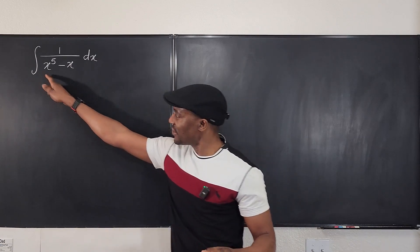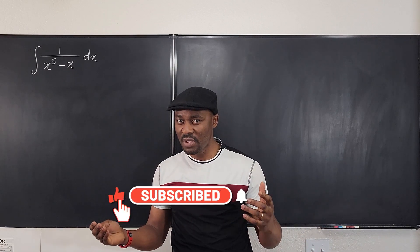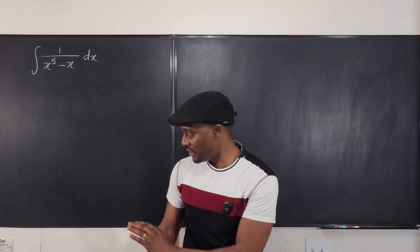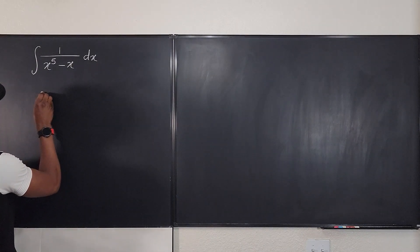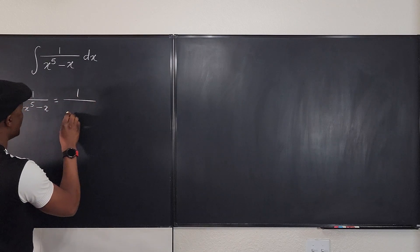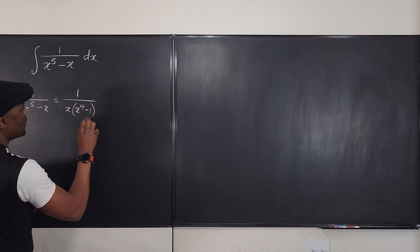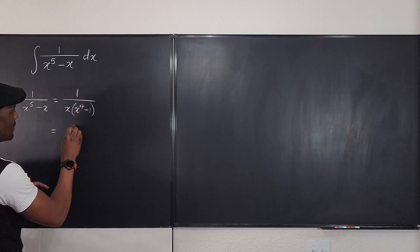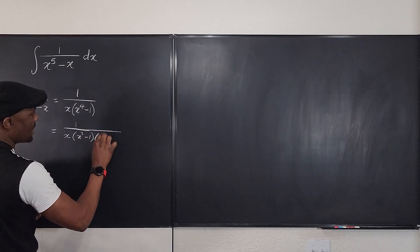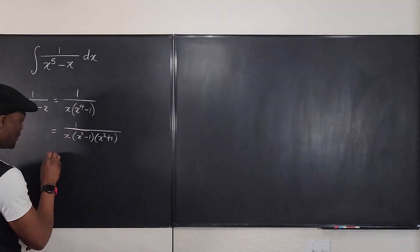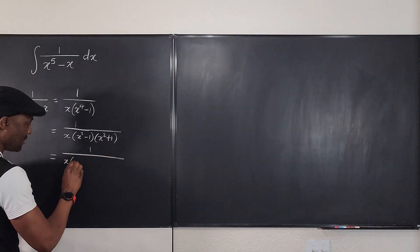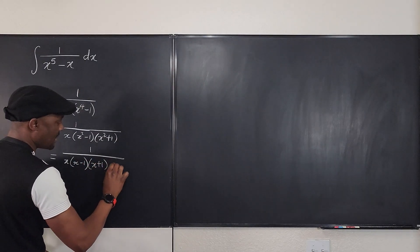But if you can factor the denominator into simpler terms, you might go to partial fraction decomposition, right? Yes, because that would be the universal way that always works. Because if we break this down — 1 over x to the 5th minus x — this is the same thing as factoring out x: that's x times x to the 4th minus 1. You can break this down further as 1 over x times x squared minus 1 times x squared plus 1, treating it as a difference of two squares, giving you x times x minus 1 times x plus 1 times x squared plus 1.